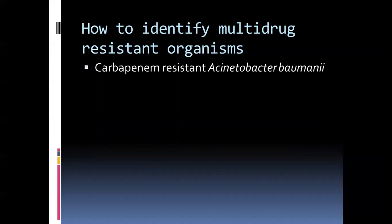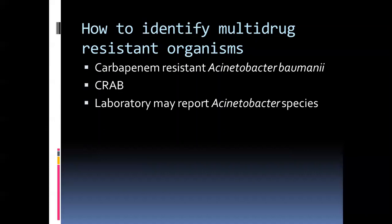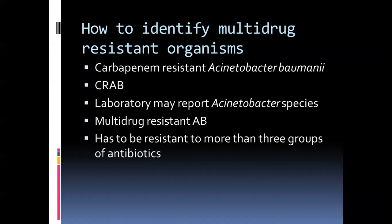Another organism to watch for is carbapenem-resistant Acinetobacter baumannii, more commonly known as CRAB. The laboratory may not speciate Acinetobacter baumannii and usually reports them as Acinetobacter species. That alone, combined with multi-drug resistance to three or more antibiotic families — just like Pseudomonas aeruginosa — should alert you to employ infection control and consider treatment options. Treatment options again include colistin, among other drugs if available in the susceptibility profile.